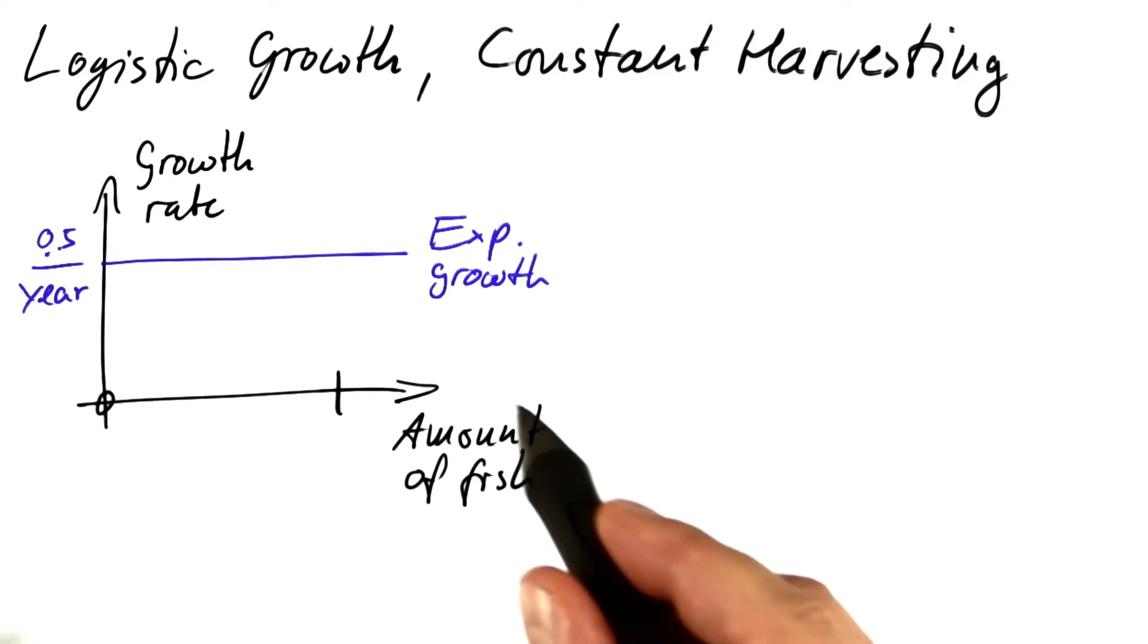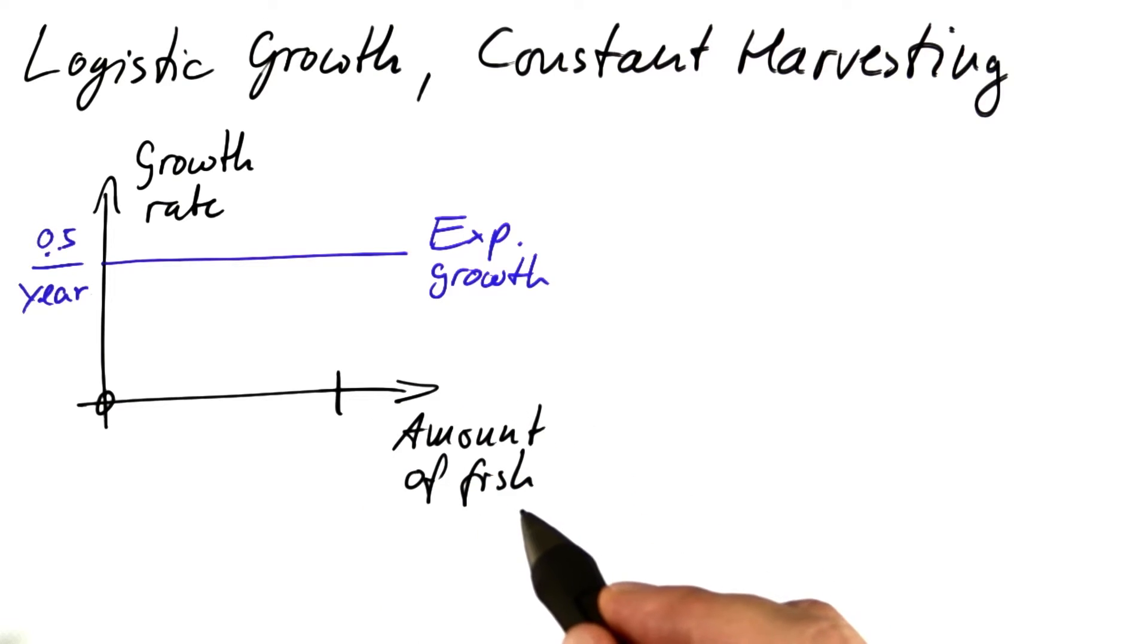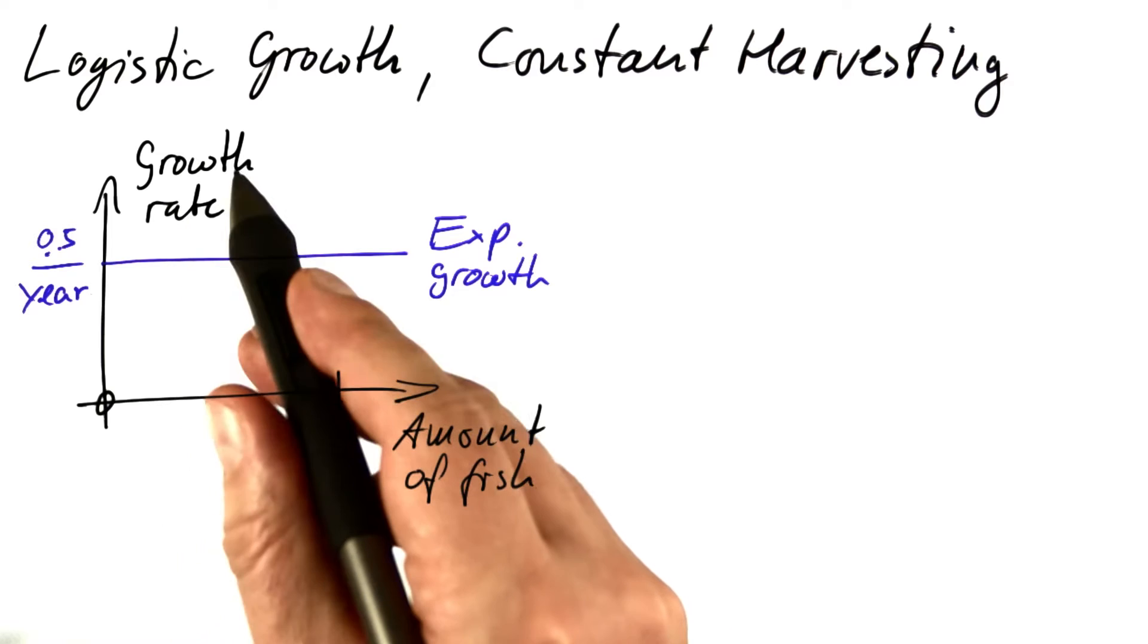So now, the horizontal axis is not the time, it's the amount of fish, and the vertical axis is the growth rate.